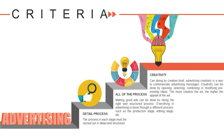The last criteria for advertising: first is creativity — advertising creativity is a way to communicate an advertising message, and can be done by opening, selecting, combining, or modifying pre-existing ideas. The more creative the ad, the higher its appeal. Second is process — making good ads can be done by following the right and structured process, such as the production stage, editing stage, and so on. Each stage must be carried out in detail.